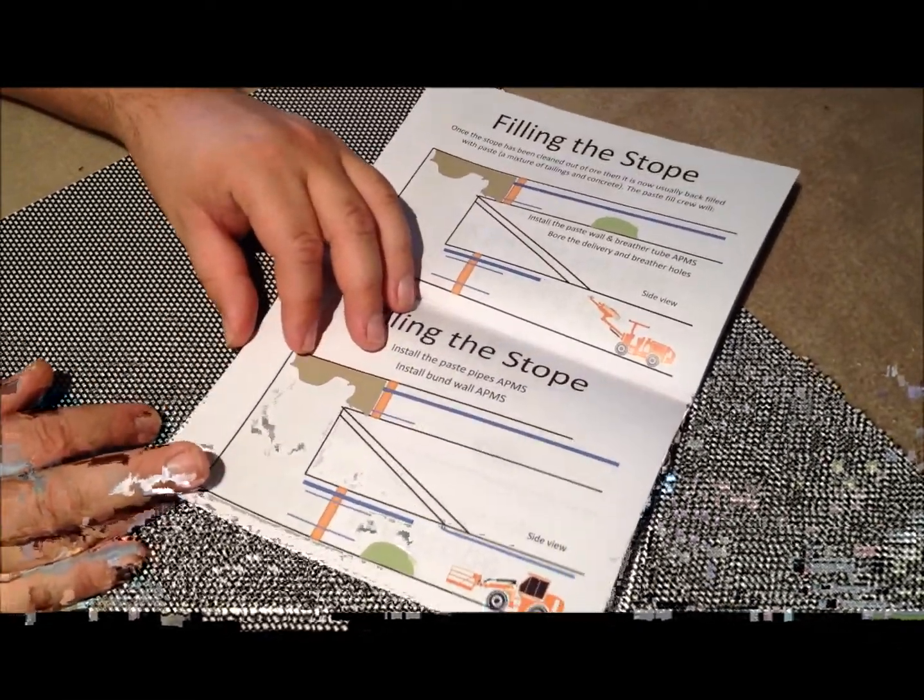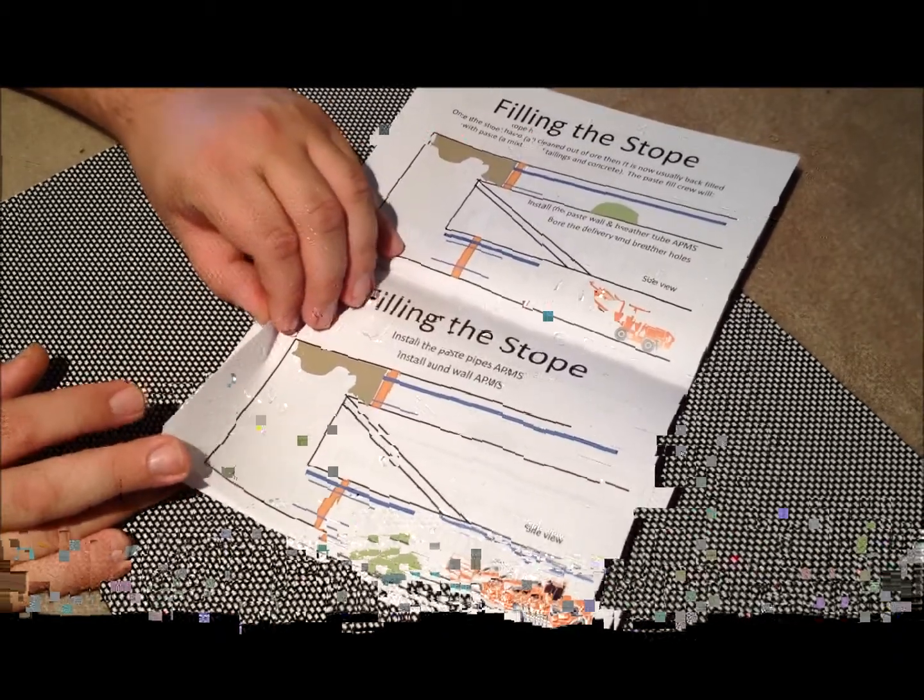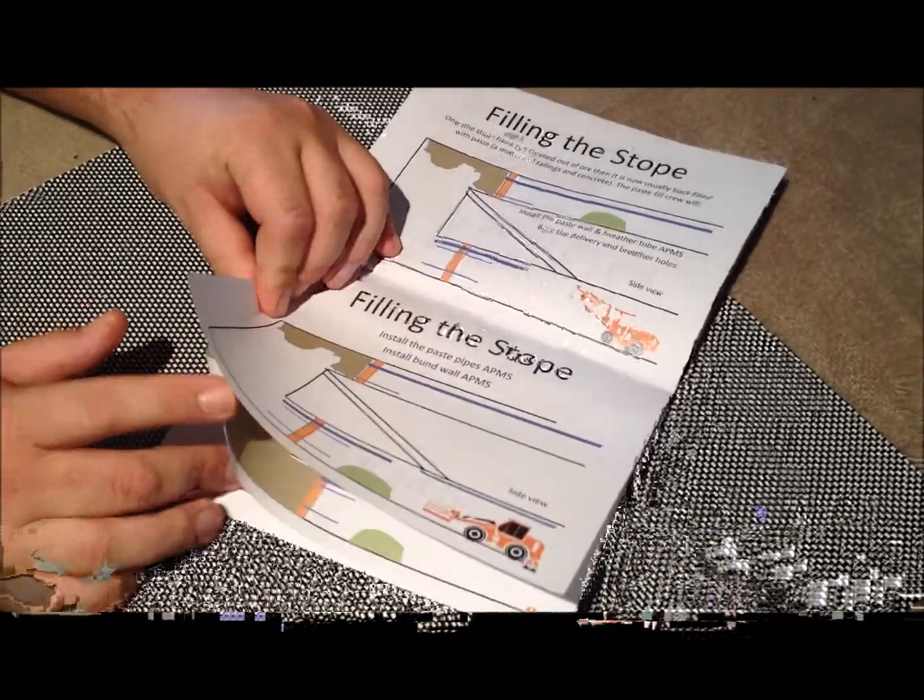We backfill it with paste. Most Australian hard rock underground mines now use paste and it's a pretty good thing—it fills the old open holes up.